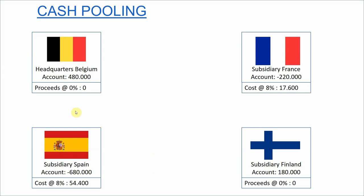Let's say that the proceeds of a positive cash balance are 0%, which makes sense these days, and the cost of an overdraft is 8%. So the cost for the French subsidiary would be 17,600 euro and the cost for the Spanish subsidiary would be 54,400 euro.